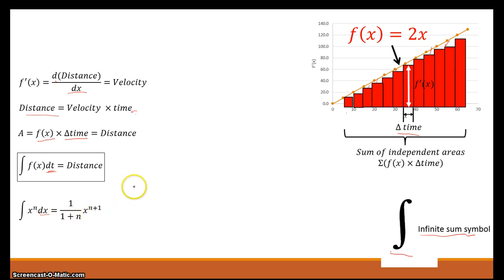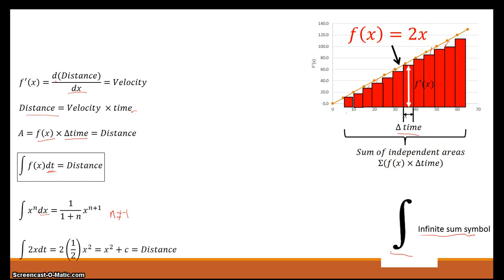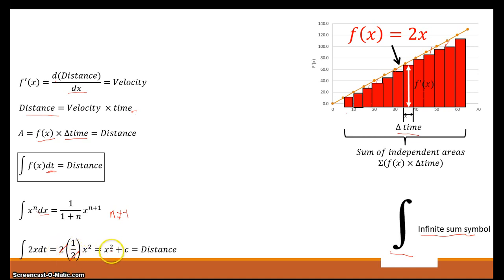This is true so long as n does not equal negative 1. If we apply this antiderivative rule to f of x equals 2x, what we'd end up with is taking the antiderivative of 2x with respect to time. The constant 2 goes outside of the infinite sum symbol — it doesn't get changed. Then we follow the rules: add one to the exponent, so 1 plus 1 gives x raised to the 2, then divide by 2 — the new exponent. The 2s cancel out, and you're left with x raised to the second power.